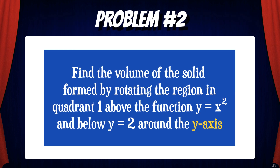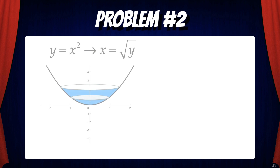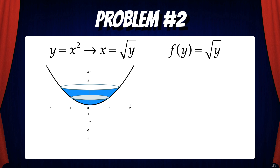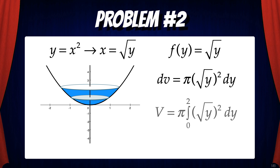Let's do an example problem. Find the volume of the solid formed by rotating the region in quadrant 1 above the function y = x² and below y = 2 around the y-axis. In order to do this problem, we need to convert y = x² into x = √y. Now we have f(y), so we can find the volume of one disk, which would be π times (√y)² dy. Then we can find the volume of the solid by adding up the volumes of an infinite number of disks, and the integral lets us do this.